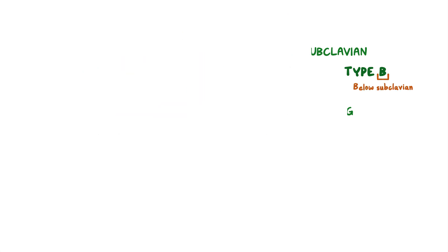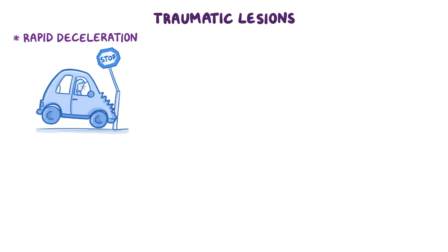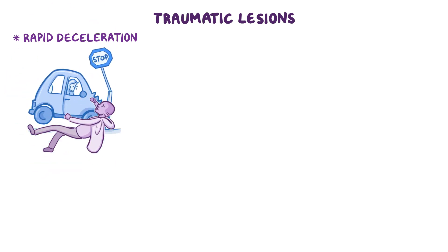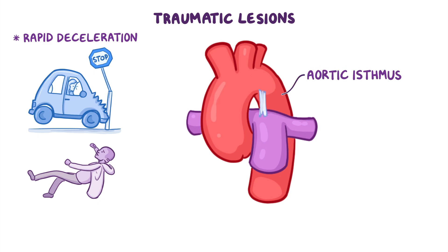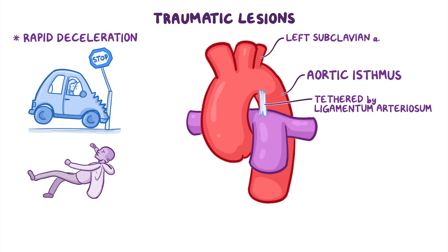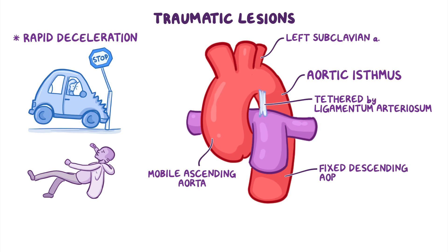The aorta can also suffer traumatic lesions which lead to aortic ruptures. These are most often a result of the rapid deceleration that is frequently associated with car crashes, but can also happen because of a fall from height. The most common site of injury is the aortic isthmus, just distal to the left subclavian artery origin, as this is tethered by the ligamentum arteriosum and is thought to be the transition zone between the mobile ascending aorta and the fixed descending aorta. Unfortunately, over 80% of people die from this before reaching the hospital.